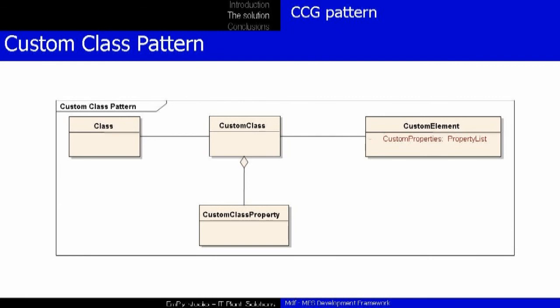For example, let us say we have a generic equipment class named MyEquipment that can be a work cell. According to the standard terminology, our class will be an ISA-95 equipment, and the custom class will be MyEquipment with the following custom attributes: MyInteger, MyDecimal, MyString, MyBool, and MyXML.